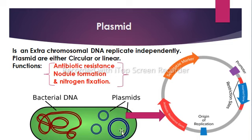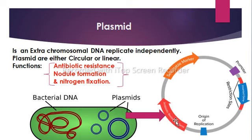Plasmids have fewer than 30 genes and have no direct role in survival. Plasmids carry many genes that give resistance to a bacterium in certain environments or harsh conditions. A plasmid can have many functions, for example antibiotic resistance, nodule formation, and nitrogen fixation.